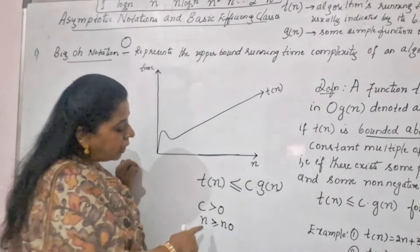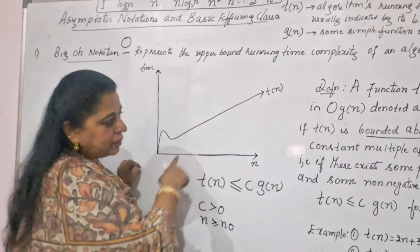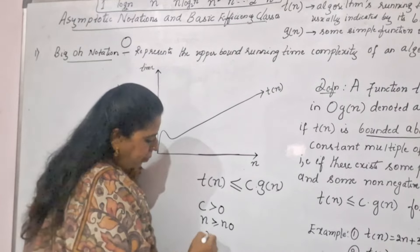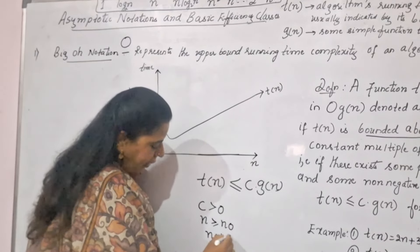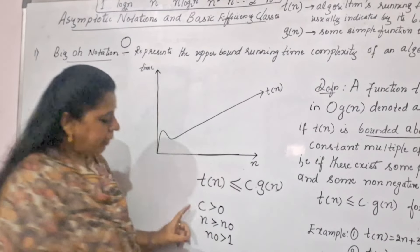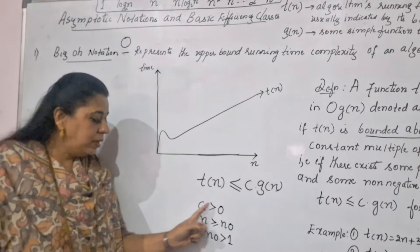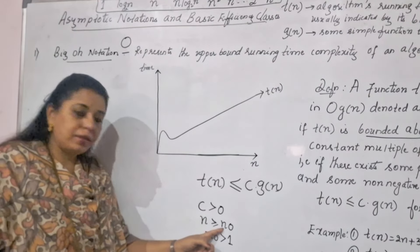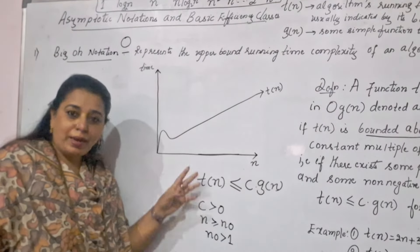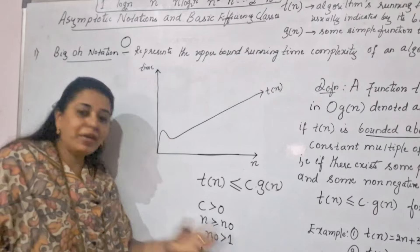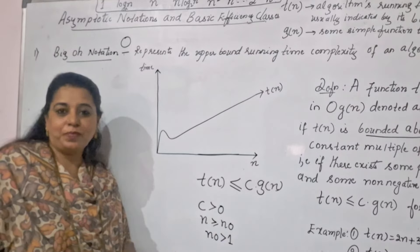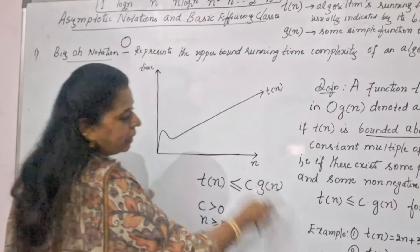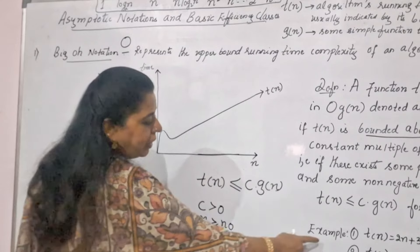And n should be greater than or equal to n₀. n₀ is a value you will understand once I plot it on the graph. Moreover, n₀ should be greater than 1. So remember these three things: c should be greater than 0, n should be greater than or equal to n₀, and n₀ should be greater than 1. Now we will take one example to understand this concept very clearly.